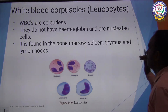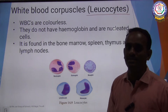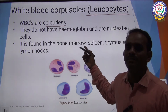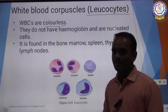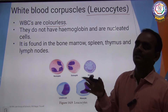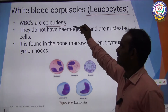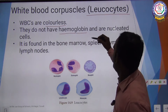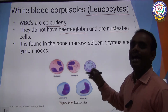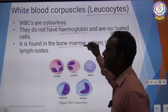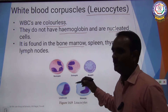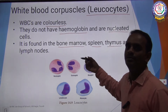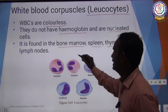The next topic is WBC. The other name for WBC is leukocyte. WBC are colorless — there is no respiratory pigment. RBC is red due to hemoglobin, but WBC is colorless. WBC have nucleated cells. WBC is also formed in bone marrow, spleen, thymus and lymph nodes, which are immune organs.